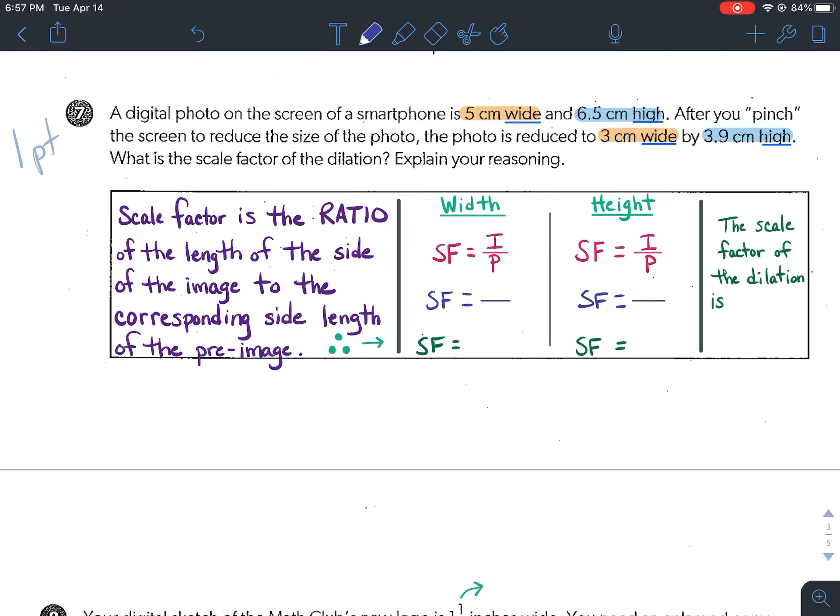But the reasoning is because we know that the scale factor is the ratio of the length of the side of the image to the corresponding side length of the pre-image. In other words, scale factor is you take the length from the image and divide it by the corresponding length from the pre-image. Scale factor equals image divided by pre-image.